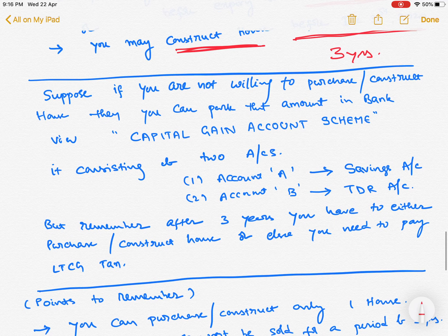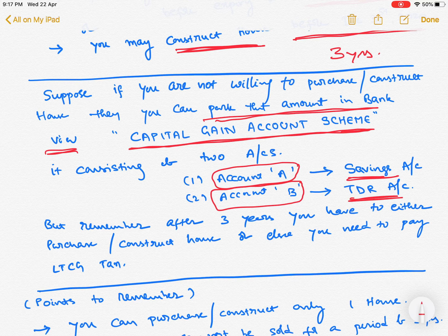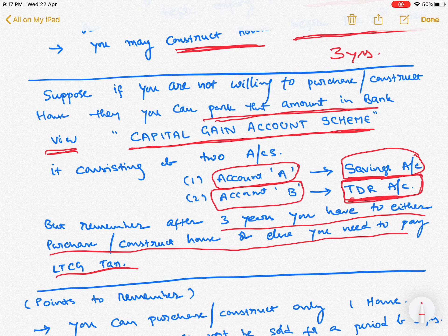If you are not willing to purchase or construct a house, you can park the entire amount in a bank by opening a Capital Gain Account Scheme. This scheme consists of two accounts: Account A, which is a Savings Account, and Account B, which is a TDR (Fixed Deposit) account. In Account A, you get savings interest on the parked amount; in Account B, the amount is in a Fixed Deposit earning FD interest. But remember, after three years, you must either purchase or construct a house, or else you need to pay long term capital gains tax.